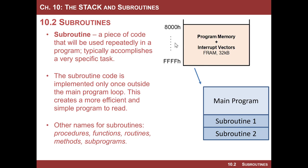So instead of taking that code and pasting it over and over, you could take it and put it outside of the main program loop. And then whenever you need it, you could just move the program counter down to the location in memory where it resides and execute it. And then when you're done with the subroutine, you would just return to the main program where you left off and continue operation. The advantage of this is that you use less program memory, so your program is going to be smaller.